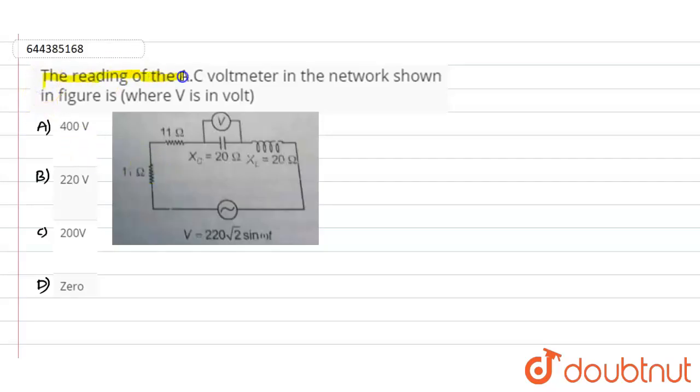Okay, so here in this question it is given that the reading of the AC voltmeter in the network shown in the figure is, where V is in volts. So this is the question - he is asking us to find out the reading of the AC voltmeter inside this circuit.